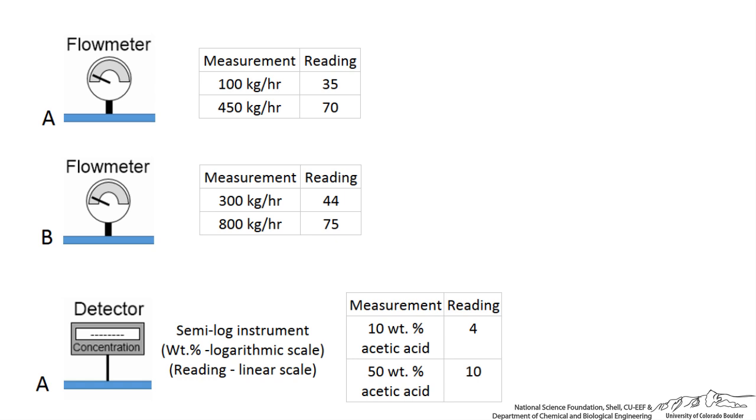You purchase some flow meters and calibrate them first with your solutions. The inline detector allows instant readings of the composition of A, helping determine the weight percent of acetic acid in the solution. Based on lab calibrations you get the values you see here in the table.